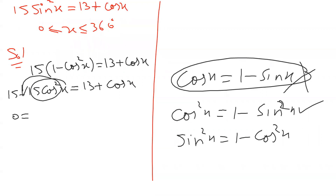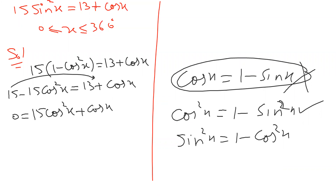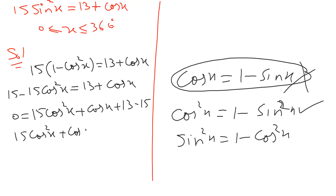Rearrange — I bring all values. Because it has a negative sign, to make it positive I move it to the right side. Plus cosine is already present. 13 minus 15 — subtract like this. After this, it becomes negative two.